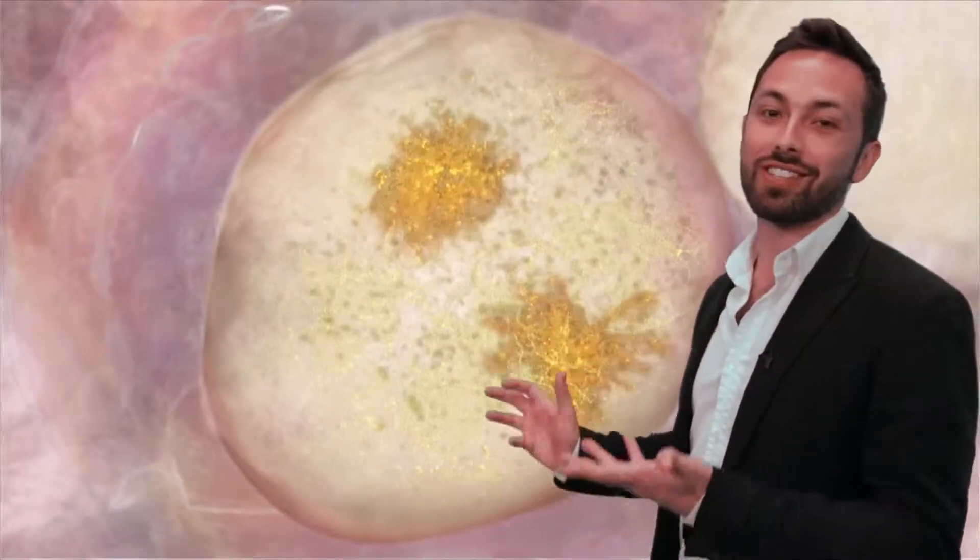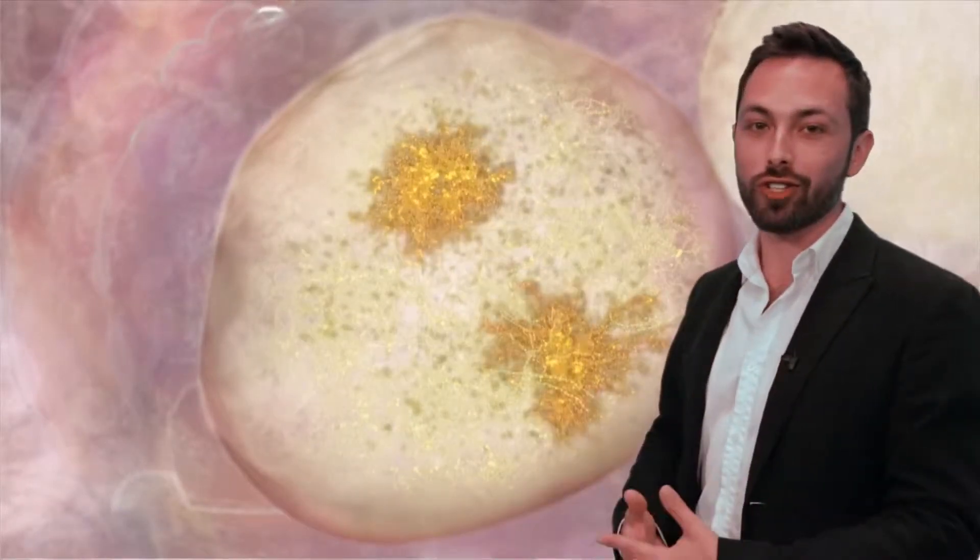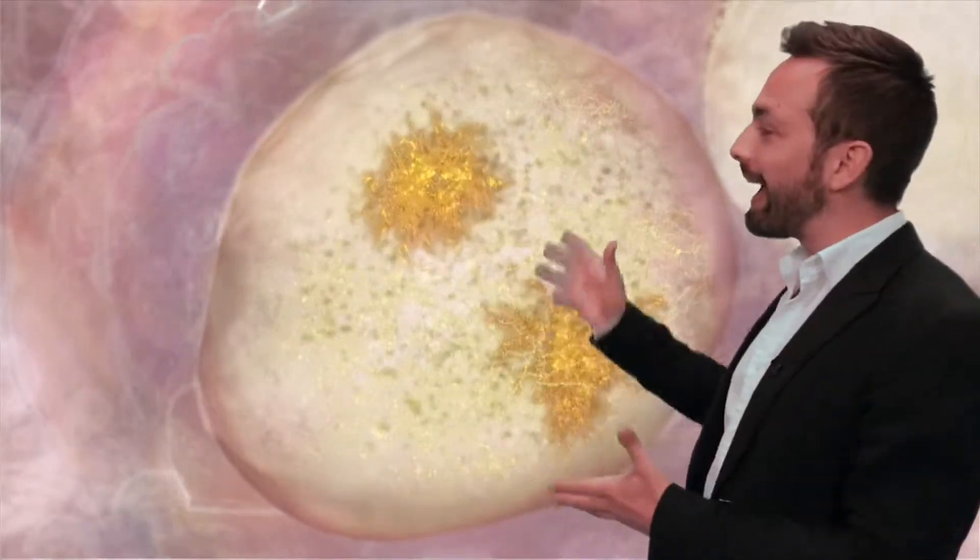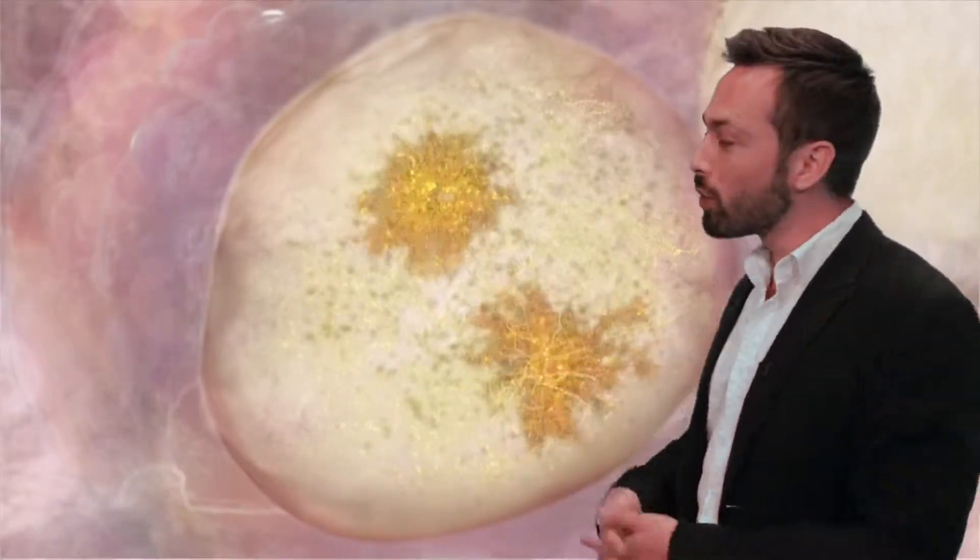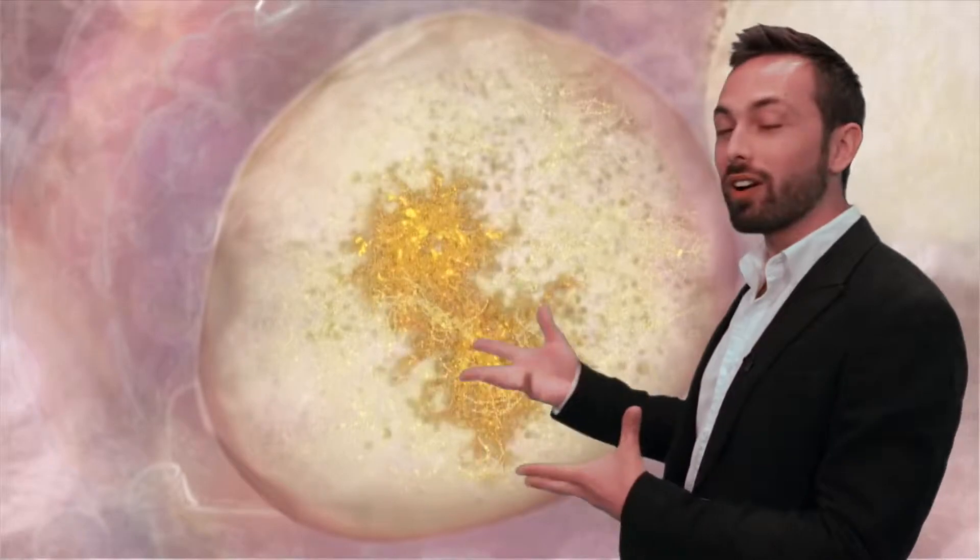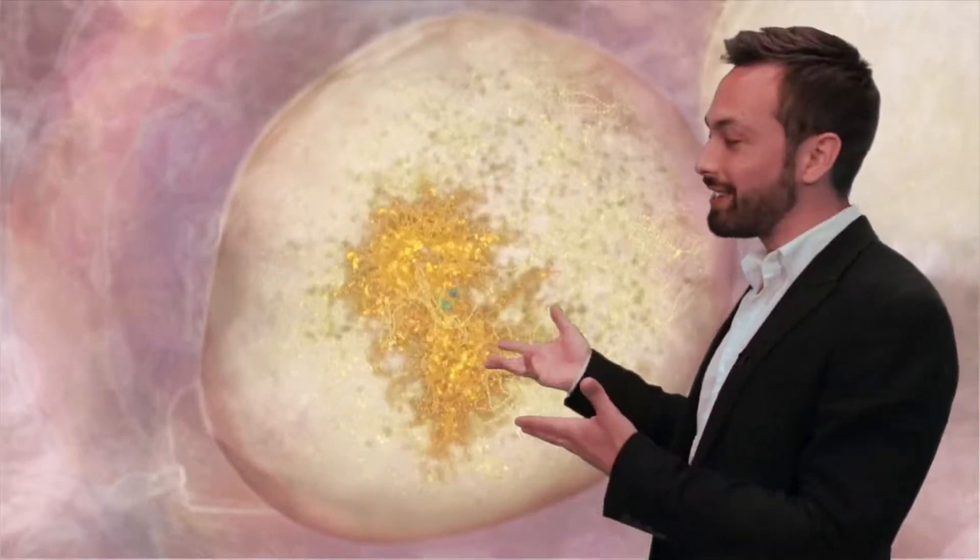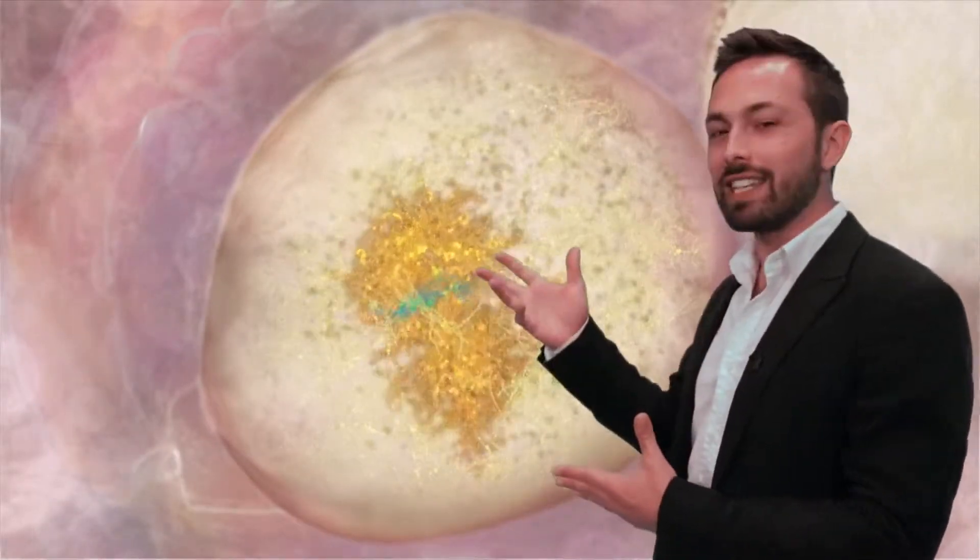This happens when a female embryo is just 4 days old and consists of only 100 cells. Right now in this cell, the X chromosome from dad and the one from mom are both active. But through a tiny molecular battle, one of the X chromosomes wins and remains active, while the other is inactivated.